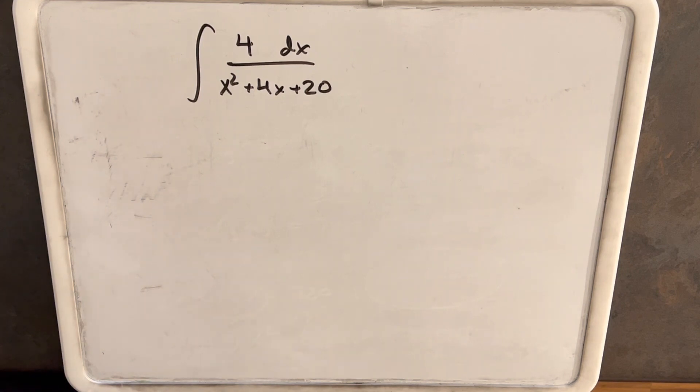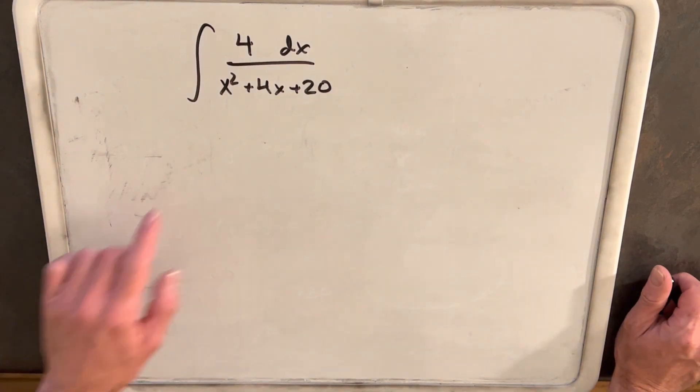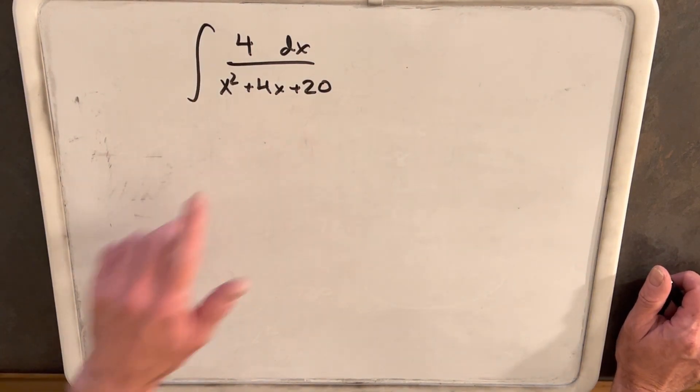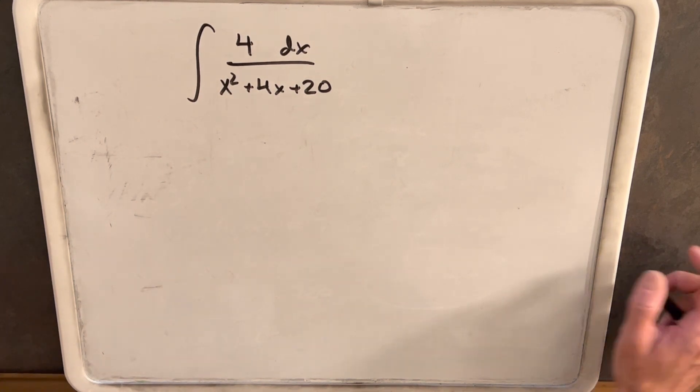Hi, we have this integral on the board. We have 4 dx over x squared plus 4x plus 20. First thing I notice about this integral is that we can't factor this denominator. We could use partial fractions, but that's not going to work in this case.